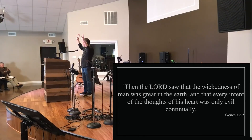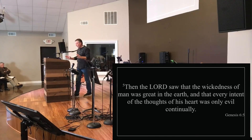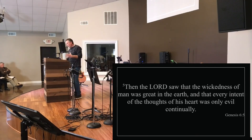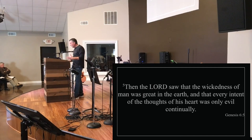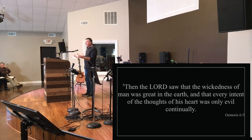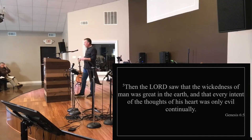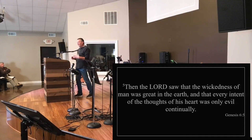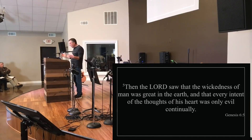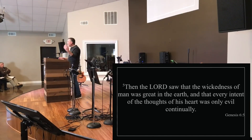Genesis 6:5 says, 'Then the Lord saw that the wickedness - the ra - of man was great in the earth, and that every intention of the thoughts of his heart was only evil continually.' So that's infected everything. From the disobedience at the tree, coming out of the garden through Cain and Abel, Lamech, then you've got a city being built - and that has all kinds of ramifications - all the way through to now there's just violence everywhere. Once ra, or evil, entered into the world, it grew like this fungus, this plague. And God had to do something about it.